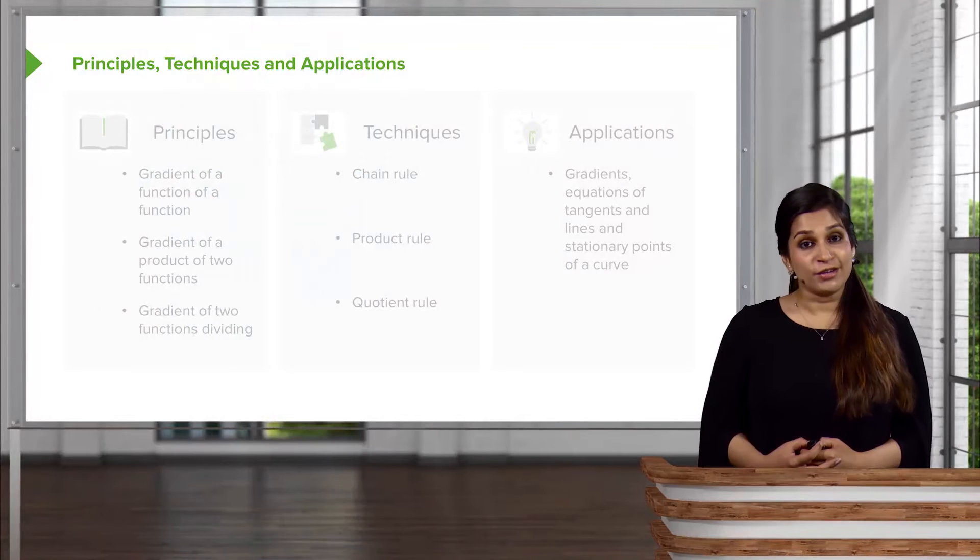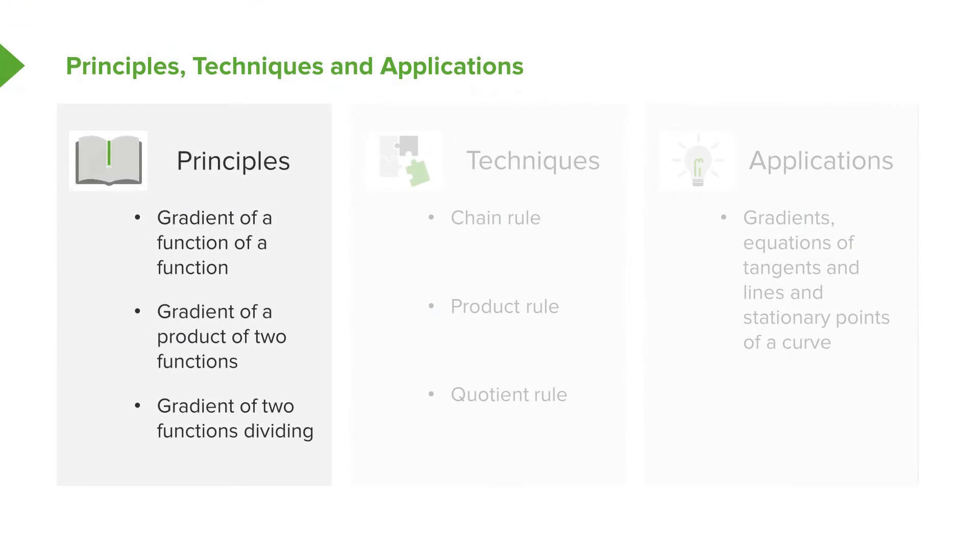Let's start looking at our three new rules. The principles here are the three different types of functions that we'll be looking at. The first type of function is called a function of a function. That really is a function inside of another function, and you can have a chain of different functions. We also refer to this as the chain rule as well.